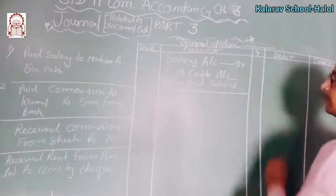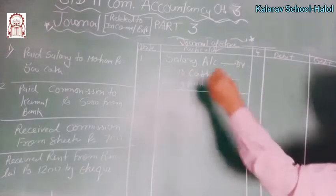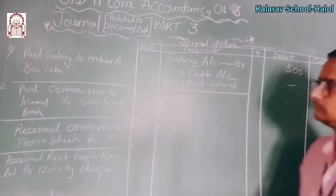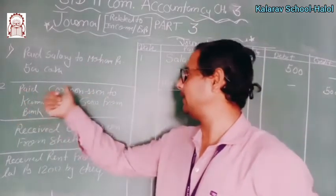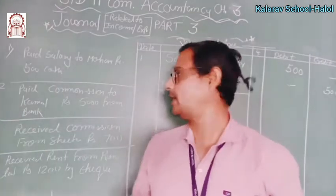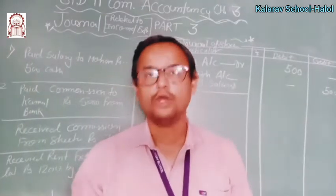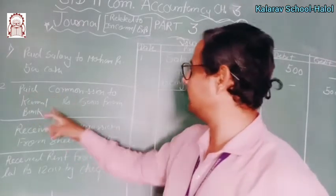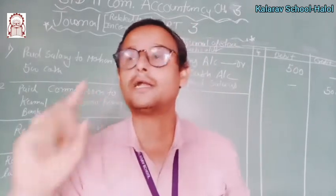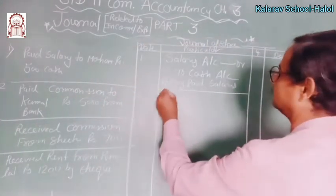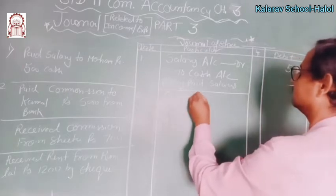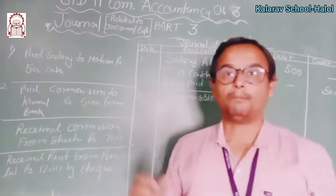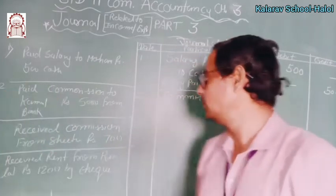You write 500 rupees like this. Next: paid commission to Kamal — kamal ko commission pay kia — 5000 from bank. You paid him by check. Again, you are paying the commission; Kamal is the receiver here, but we will not write his name. What we paid is the commission, so we will debit commission account. Now cash is not going — bank is the giver — so credit the giver: credit to bank account.